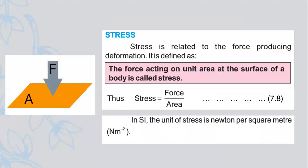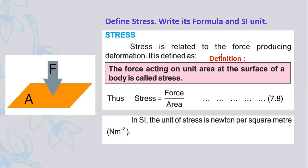Next we have stress. Write question: define stress and write its formula. Write heading: definition. Stress is related to the force producing deformation. The force acting on unit area at the surface of the body is called stress. This definition is somewhat similar to the pressure definition, but in the pressure definition we have force in a particular direction acting on a particular area.